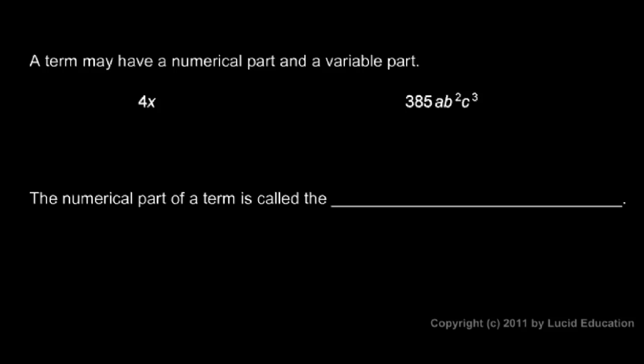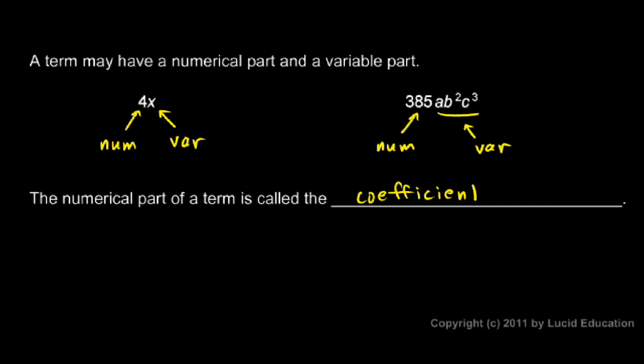A term can have a numerical part and a variable part — they don't always, but they can. In this case, the four is the numerical part and the X is the variable part. For 385 a·b²·c³, the 385 is the numerical part and a·b²·c³ is the variable part. The numerical part of a term is called the coefficient. If a term doesn't have a numerical part — for example, just a·b² — there's no number on the front.